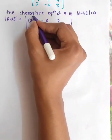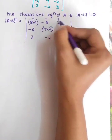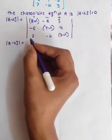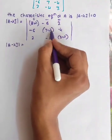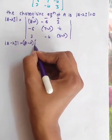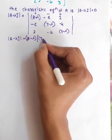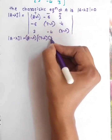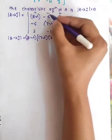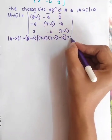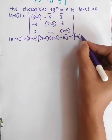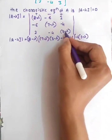Here we apply cofactor expansion with plus, minus, plus signs. Taking the determinant, we cross multiply with the minor diagonals. For the first element, 8 minus lambda times the minor: (7 minus lambda)(3 minus lambda) minus 16. Then for minus 6: minus 6 times (3 minus lambda).